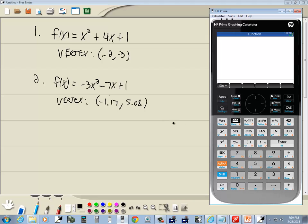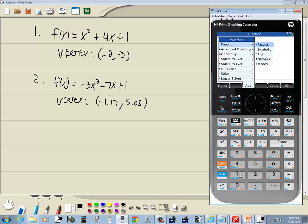And first off, if I go to my vars, you see it says app vars here. And we're in function, so I do 1 for function. Now it says results. If I press 1 for results, you see it pops up and says extremum is 1.